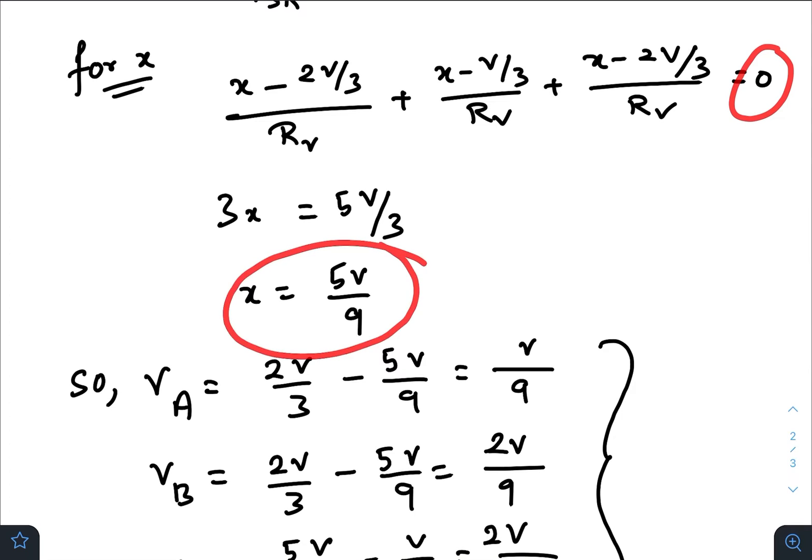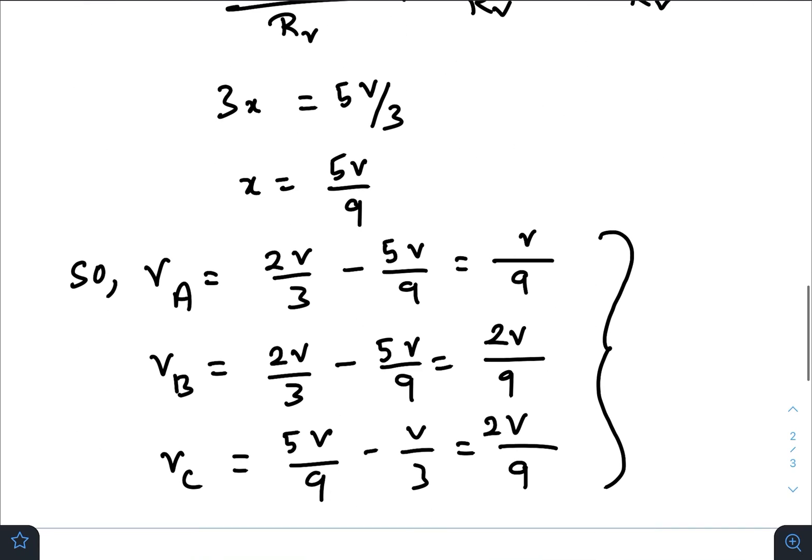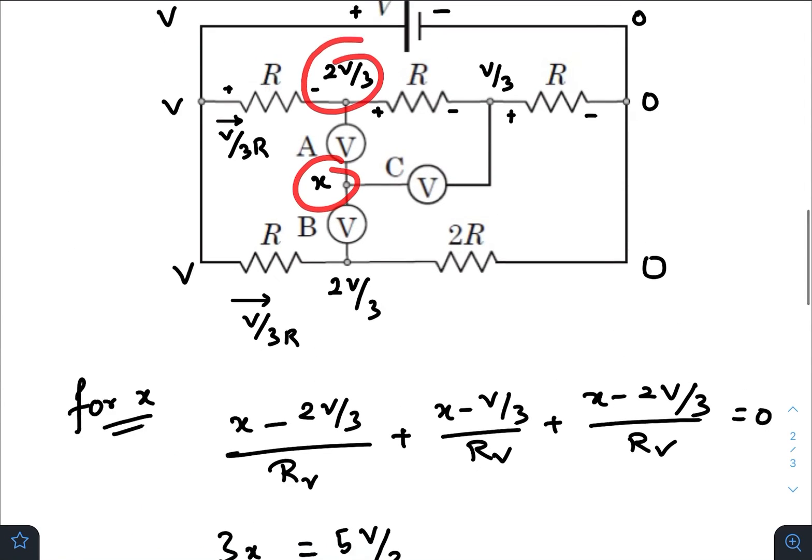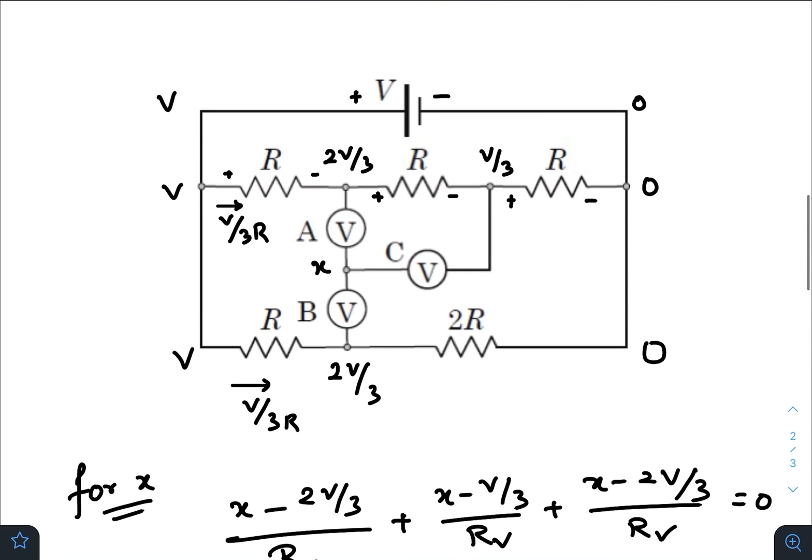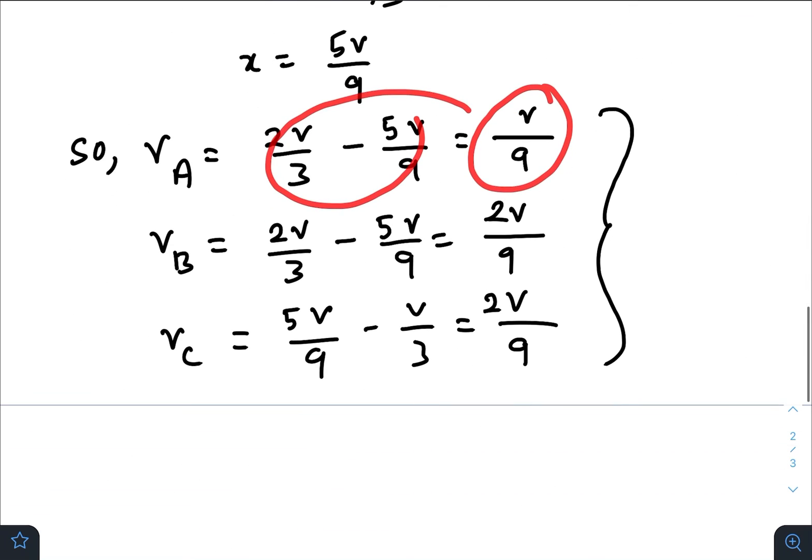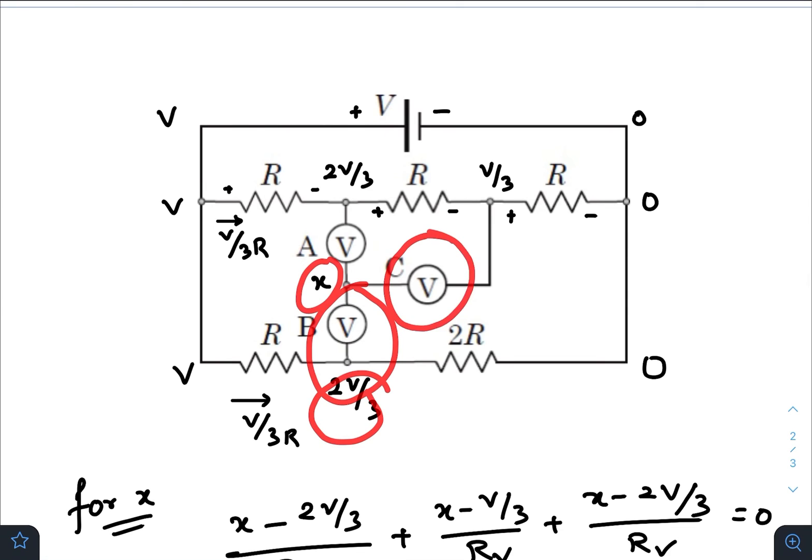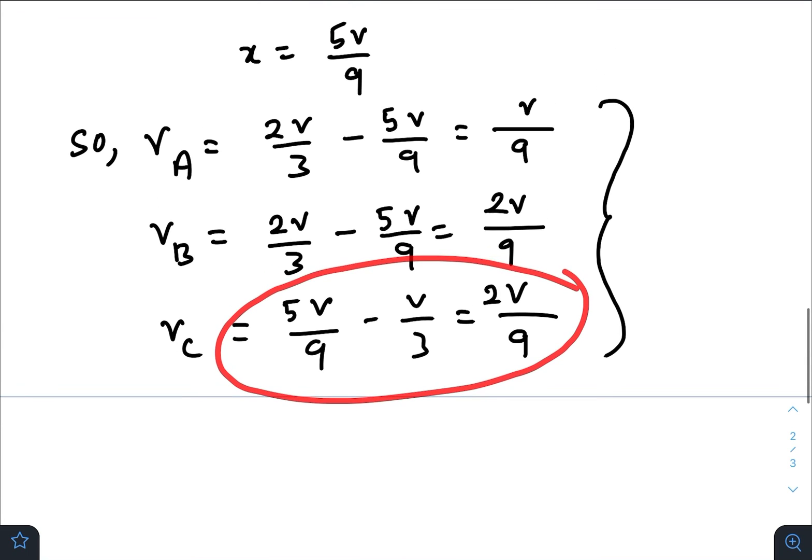calculating, we get x equals 5V/9. So we got the value of x. The readings of these three voltmeters would be: for V_A, the answer would be x minus 2V/3, or 2V/3 minus x, that is V/9. Similarly for B, it would be 2V/3 minus x, again 2V/9. And for C, it should be x minus V/3. So these are the three readings of the three voltmeters.